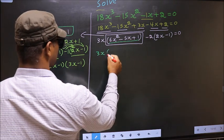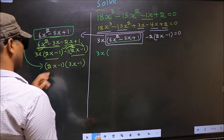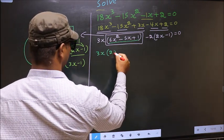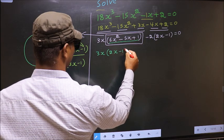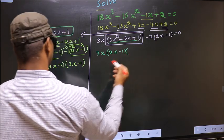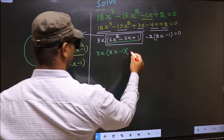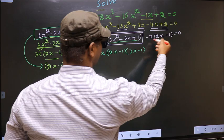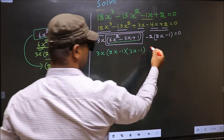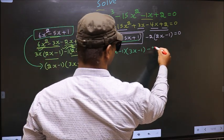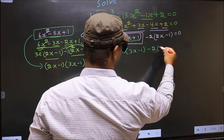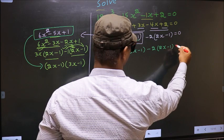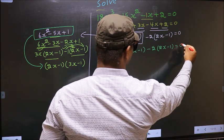So this equation will change to 3x times 2x minus 1, times 3x minus 1. Over here no change. Equal to 0.